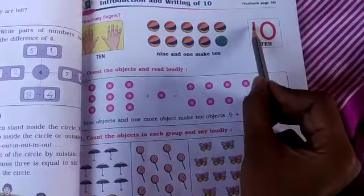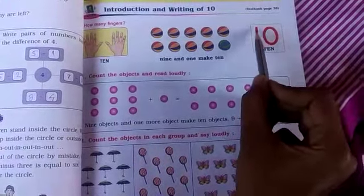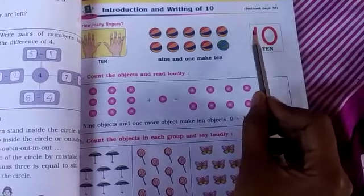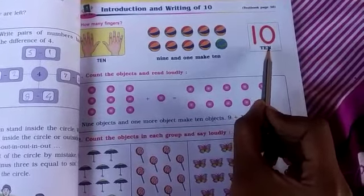10. This is 1 and 0. 10. T, E, N, 10. T, E, N, 10.